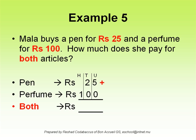Pen: Rs 25. Perfume: Rs 100. Both articles cost. Do the addition as usual. The answer is 125 rupees.